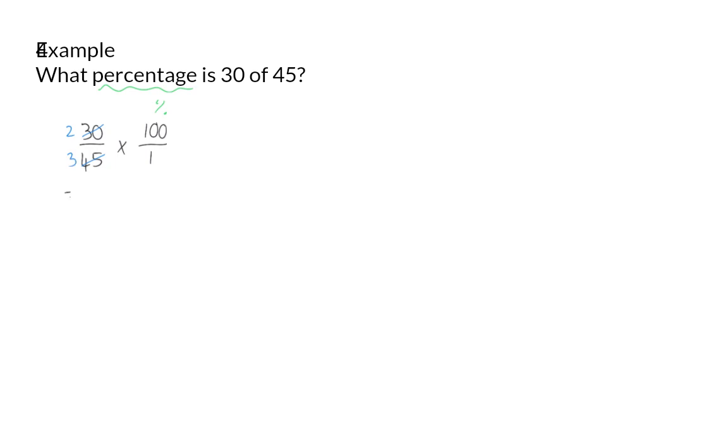Now I can simplify by dividing 30 as well as 45 by 15, and then I will have 2 thirds. So when multiplied, this will give me 200 over 3, and rewritten as a mixed number, this is 66 and 2 thirds percent.